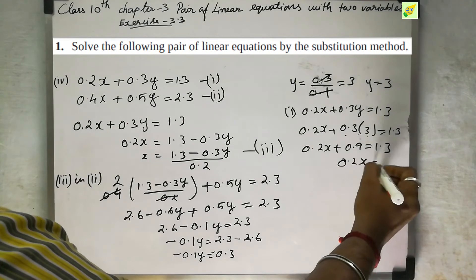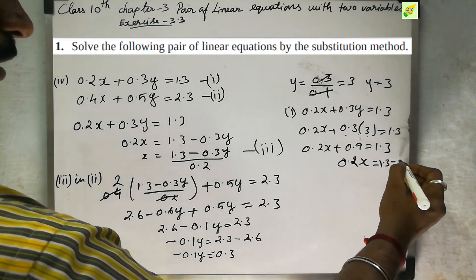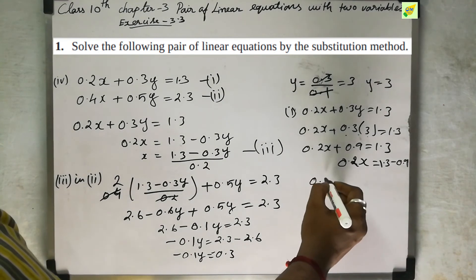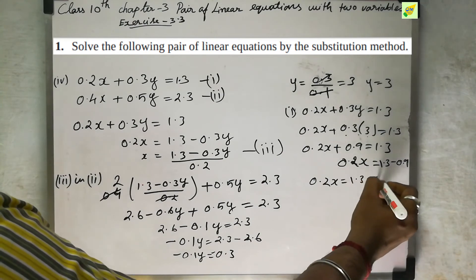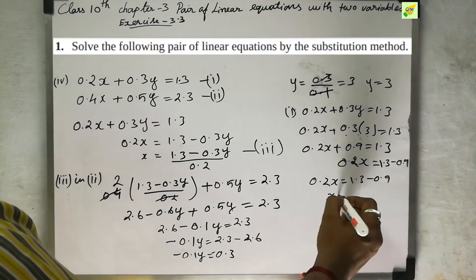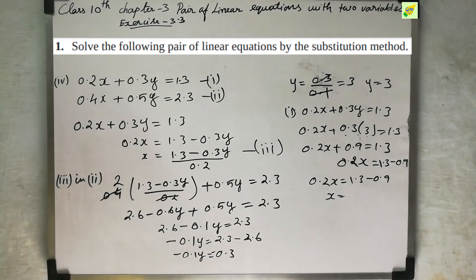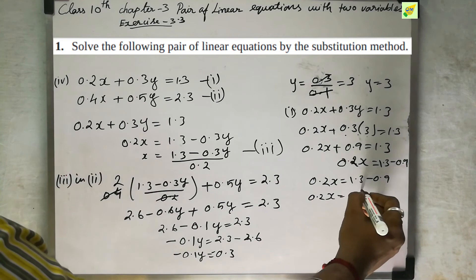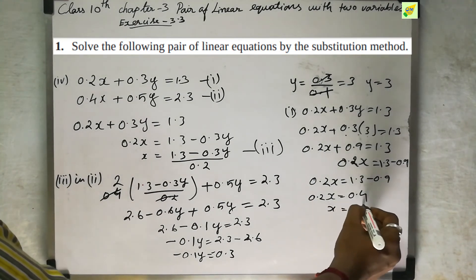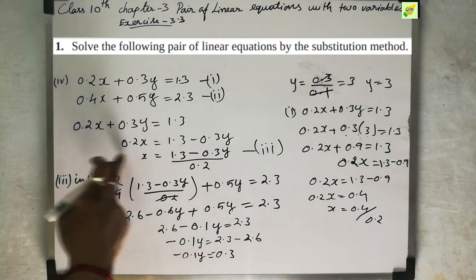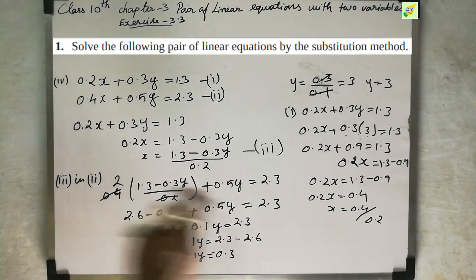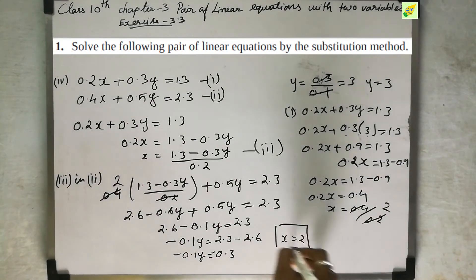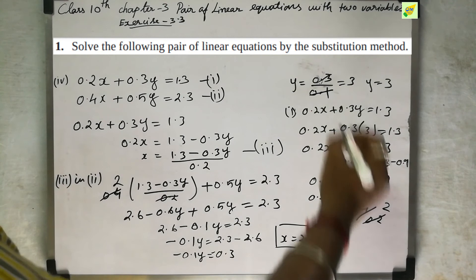So 0.2x equal to 1.3 minus 0.9, which is 0.4. Therefore x equal to 0.4 divided by 0.2, which gives x equal to 2. So the answer is x equal to 2 and y equal to 3.